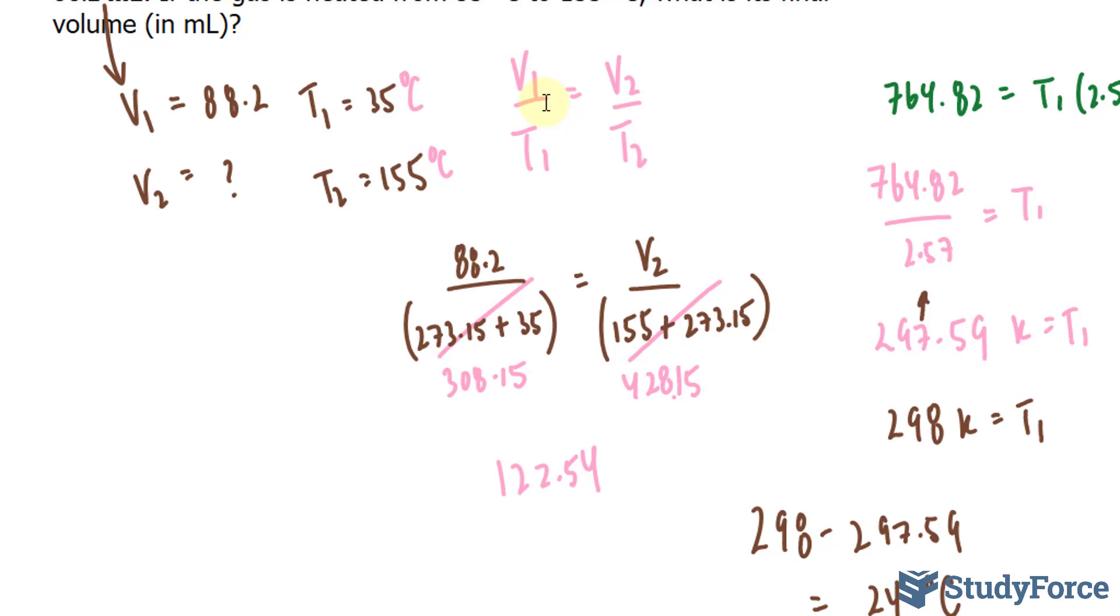Our final answer should have three significant figures. So, this, given that it's a 5 and it's followed by another number, this means that this will go up to 123 and the units are in liters.